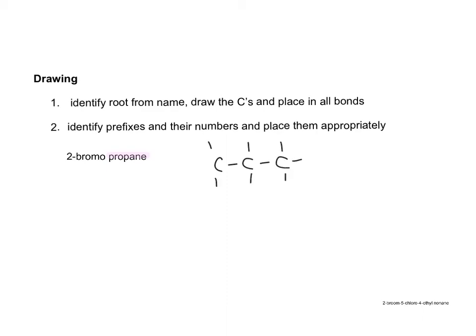Then put in all your bonds. You know each carbon makes 4 bonds. It says that our side group is bromo, and it is on carbon number 2. So find carbon number 2, this would be carbon number 1, this would be carbon number 2, and place in your halogen, and then put in all your hydrogens. So there you go, 2-bromopropane.